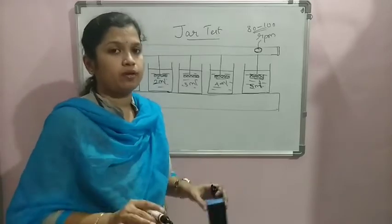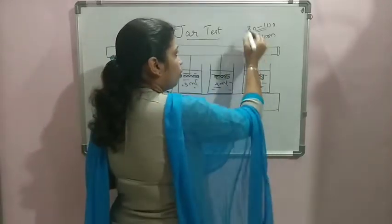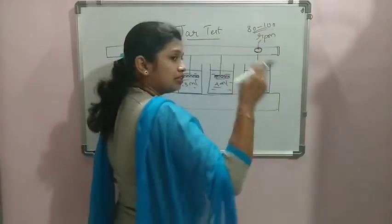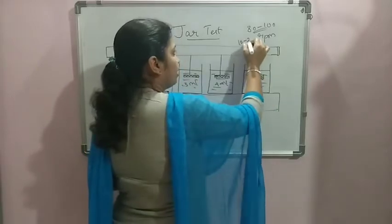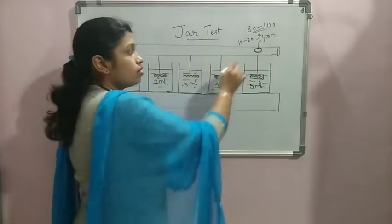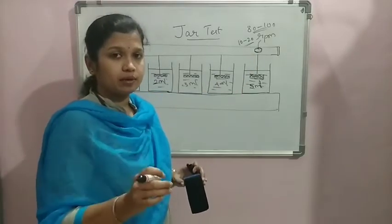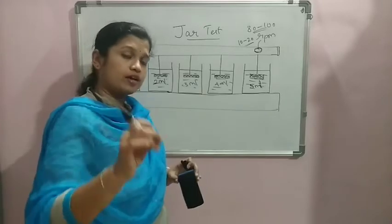Then we want the flocculation to take place. To do that, after 2 to 3 minutes we will be lowering the rpm and we will be slowing down to 10 to 20 rpm. It can be even less also. When this is given, the agglomeration of the particles starts taking place.